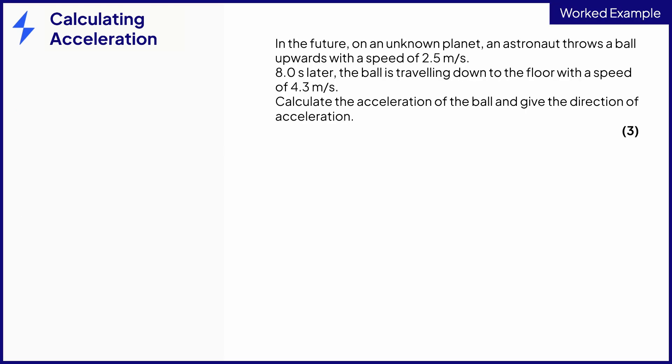This question is a great opportunity to talk about positive and negative velocities. In the future, on an unknown planet, an astronaut throws a ball upwards with a speed of 2.5 meters per second. 8.0 seconds later, the ball is traveling down to the floor with a speed of 4.3 meters per second. Calculate the acceleration of the ball and give the direction of acceleration for three marks.